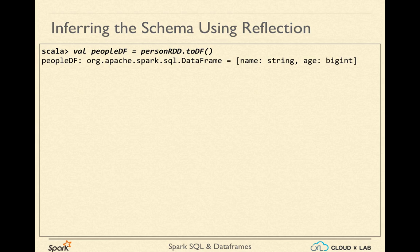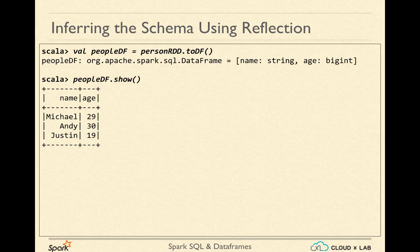In the code, peopleDF is the DataFrame on which we can operate further. We can take a look at this DataFrame using the show function. You can see that Spark has inferred the column names automatically from the objects. This is done using the reflection ability of Java. Using reflections, a Java class can discover the attributes and functions of another object.